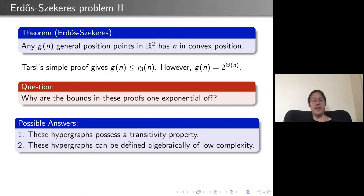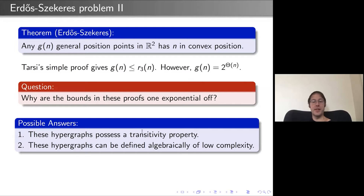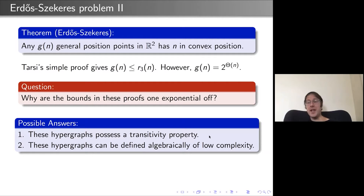Another natural reason is that these hypergraphs can be defined algebraically with low complexity. The vertices can be represented as points and the edges are determined by whether they satisfy a certain system of polynomial inequalities of bounded degree. There's a notion of complexity defined algebraically — if you can define an appropriate notion of dimension, these graphs and hypergraphs have low complexity, that is, they are of low dimension.